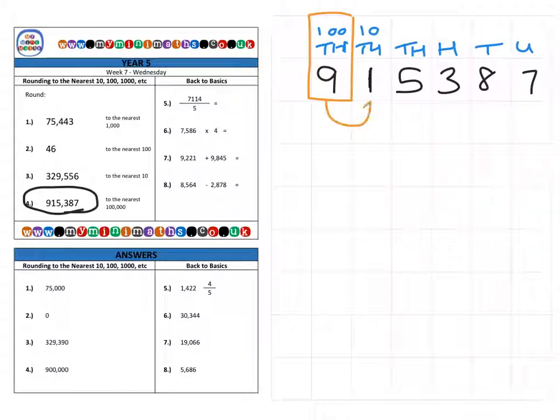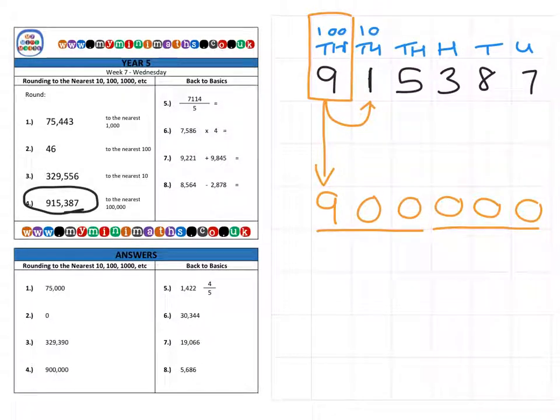As I'm sure you can work out now, it doesn't matter where that digit is. We just look next door, and it's a 1. Again, 0, 1, 2, 3, or 4 means the number stays the same. My number remains as a 9, and then we follow it up with our zeros, and we have 900,000 for the final answer.